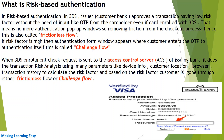The bank skips this particular window and approves the transaction directly, making the checkout process easier, smoother, and more frictionless — that's why this is called frictionless flow. If the issuing bank finds that the risk factor is high, the authentication form window appears where the customer enters the OTP to authenticate. This is called challenge flow.